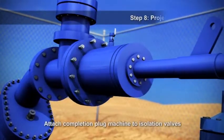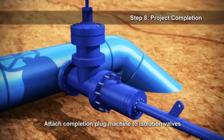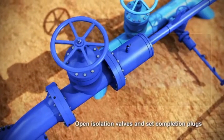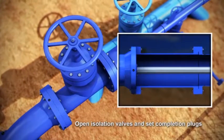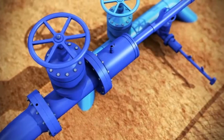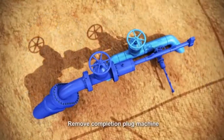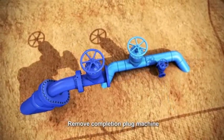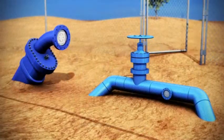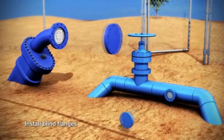Step 8: Project completion. The completion machines with completion plugs are attached to the isolation valves, the pressure equalized, and the isolation valves opened. Advance and set the completion plugs in the flanges. Depressurize and remove the completion plug machines. Remove the isolation valves and install blind flanges.